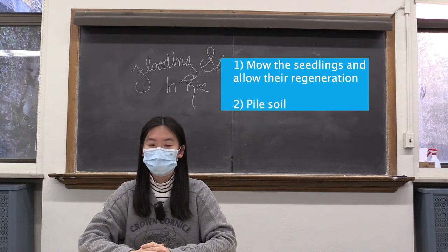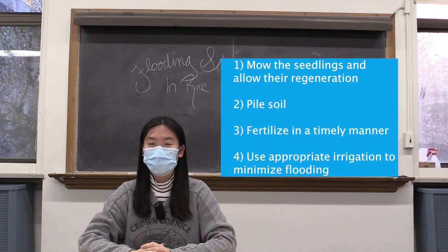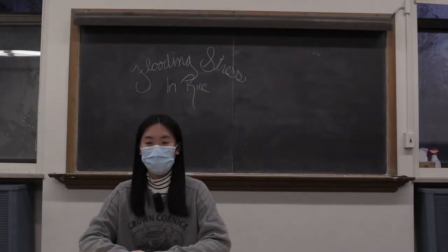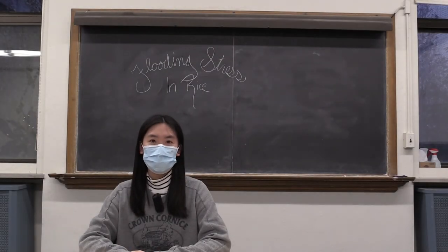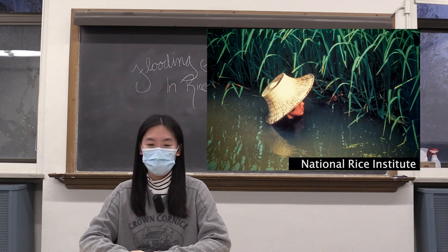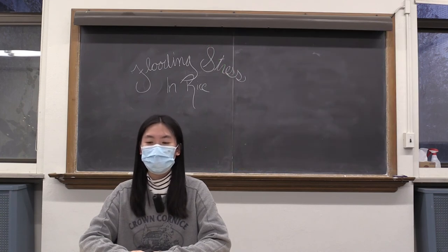Second, pile up the soil. Third, apply fertilizer in time. For field management, keep the shallow water layer and the appropriate aggregation. Fifth, pasture control — moisture after flooding is good for pasture hatching. Rice has higher resistance to flooding. For example, there is a kind of rice called deep water rice. This rice can grow in water even deeper than a human body's height. As long as the leaves can stick out of the water, they can grow. This is the reason why we chose rice to start our video.